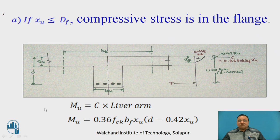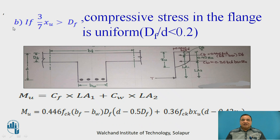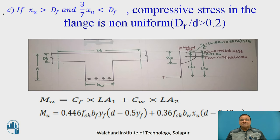By equating C equal to T, that is 0.446 FCK into B into Xu, if I equate it to 0.87 Fy into Ast I will get Xu. Then I will see whether Xu is less than Df. If Xu is less than Df it is case A. If Xu is greater than Df and 3 by 7 Xu is also greater than Df then it is case B. If Xu is greater than Df and 3 by 7 Xu is less than Df then it is case C.